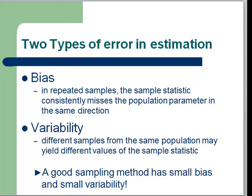So it either consistently overestimates the population proportion or consistently underestimates the population proportion. The error occurs in the same direction.